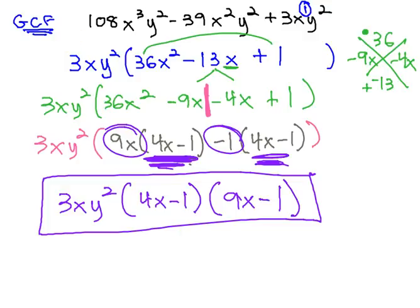When factoring, we always start with the GCF, and then if there are three terms, we will continue using the AC method.